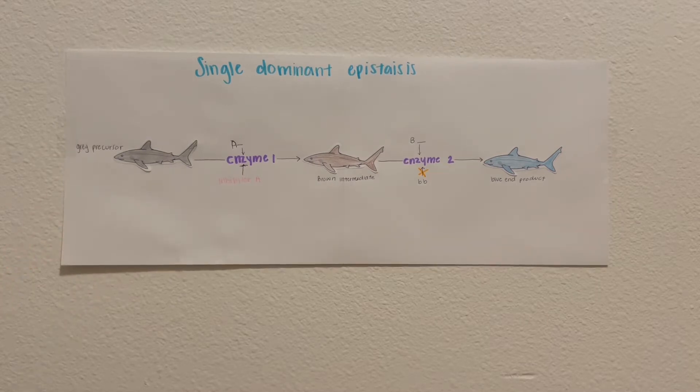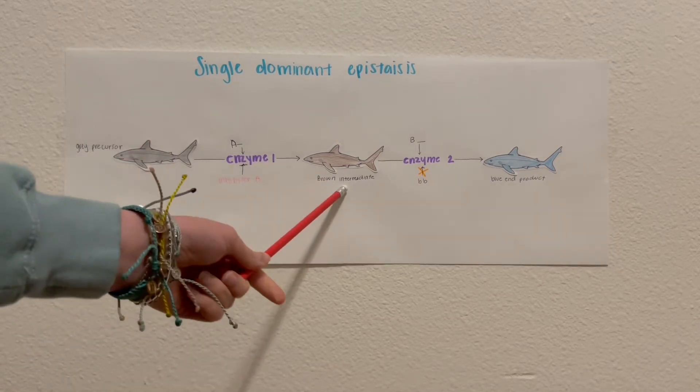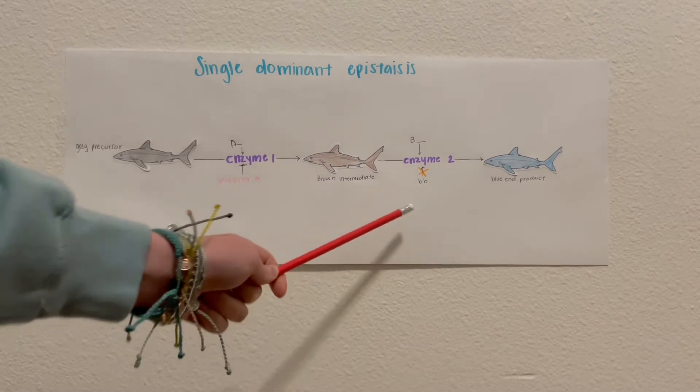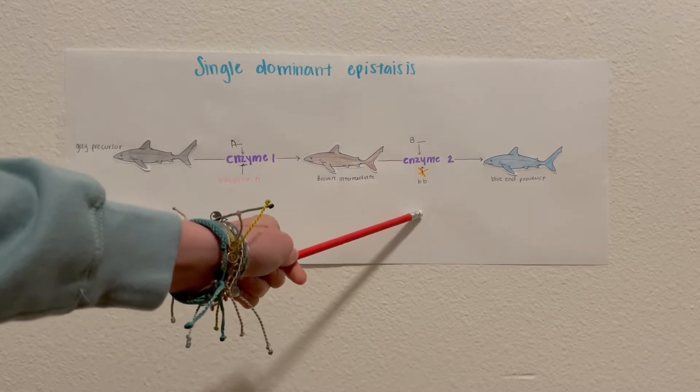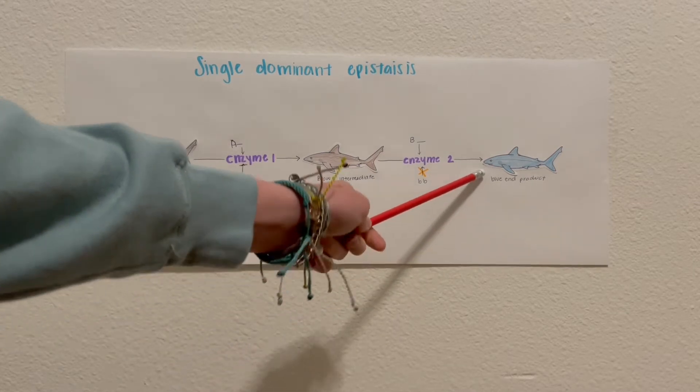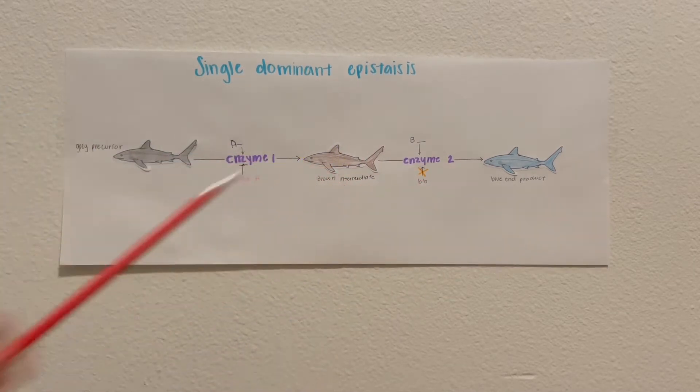If there are no capital A's in the genotype, then a capital B will result in the brown intermediate for sharks. And if there are also no capital A's and no capital B's, so you are homozygous recessive for both genes, then you can get the blue end product for the sharks.